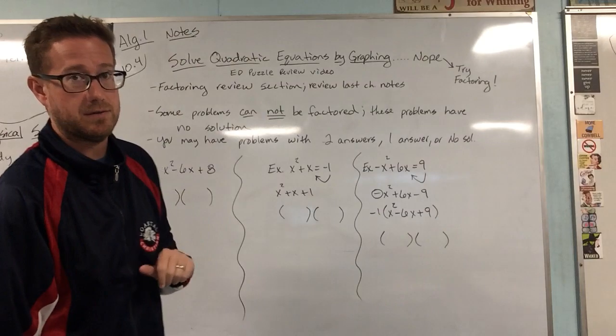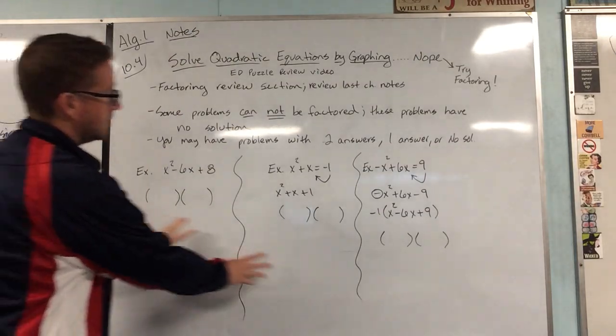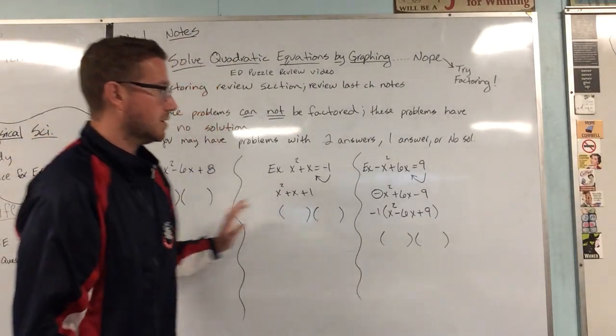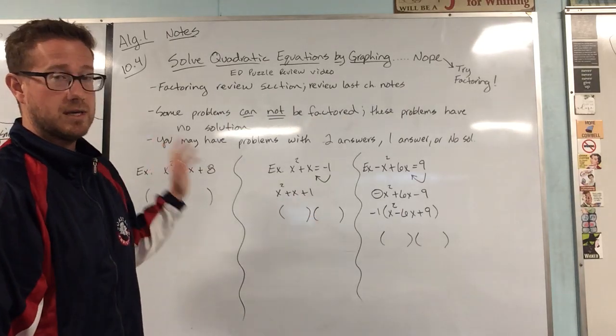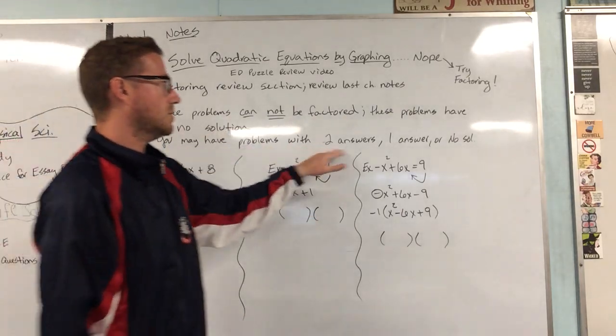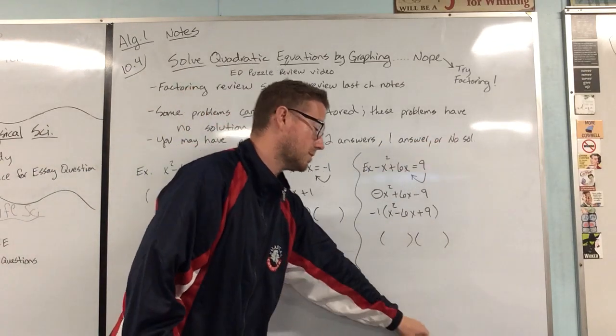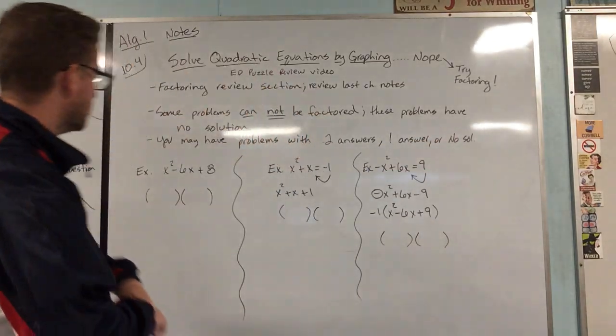So I've put three examples up here on the board, and so we're going to work all three of these out. You're going to see all three of these will give you examples for problems that could be two answers, one answer, or no solution answers.